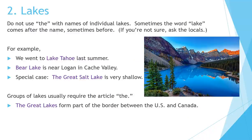Number 2: Do not use THE with names of individual lakes. Sometimes the word lake comes after the name, sometimes before. If you're not sure, ask the locals. For example, we went to Lake Tahoe last summer. Bear Lake is near Logan in Cache Valley. Special case: The Great Salt Lake is very shallow. Groups of lakes usually require the article THE. The Great Lakes form part of the border between the U.S. and Canada.